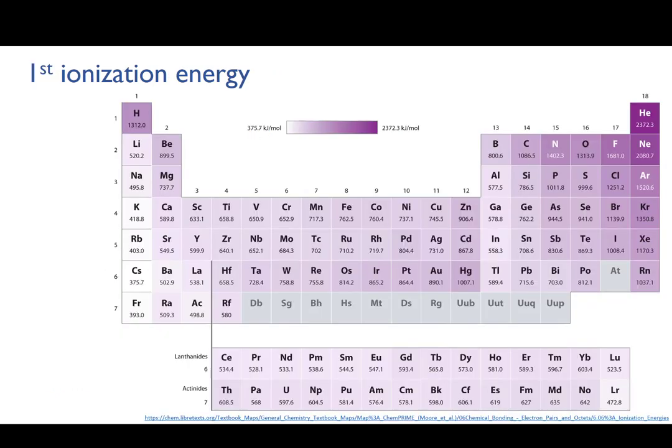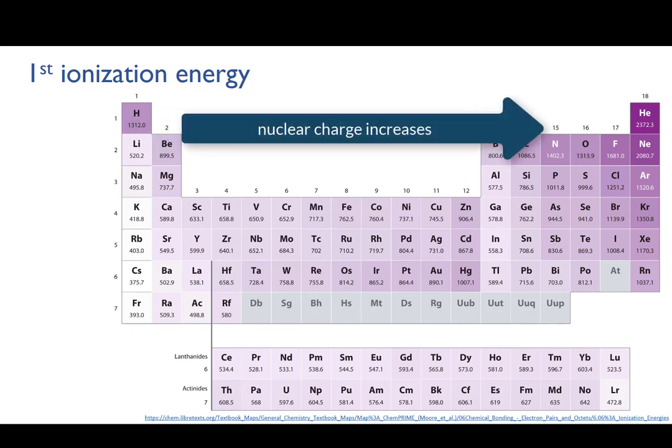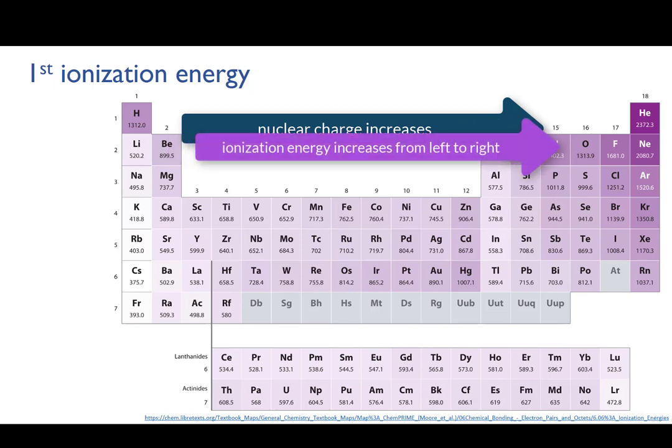Moving from left to right across a period, the valence shell doesn't change. So the second and third factors don't come into play. But the atomic number is increasing. So the main thing that happens is that the electrostatic attraction between nucleus and electron increases. This matches the general trend. The ionization energy is increasing as you go across a period.